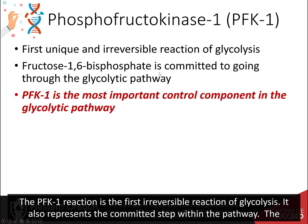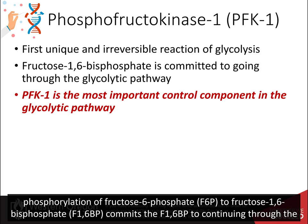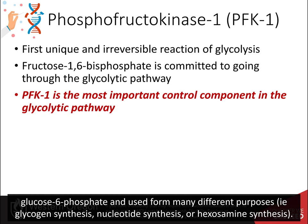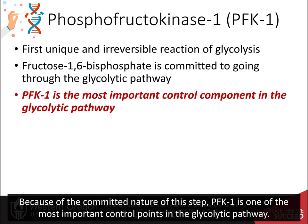The PFK1 reaction is the first irreversible reaction of glycolysis. It also represents the committed step within the pathway. The phosphorylation of fructose 6-phosphate to fructose 1,6-bisphosphate commits fructose 1,6-bisphosphate to continue going through the glycolytic pathway — it cannot be utilized for any other purpose at that point. Fructose 6-phosphate, on the other hand, could be converted back to glucose 6-phosphate and used for many different purposes, such as glycogen synthesis, nucleotide synthesis, or hexosamine synthesis.